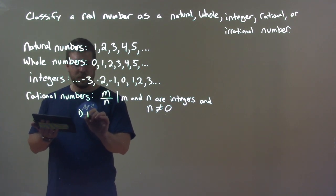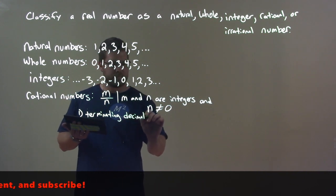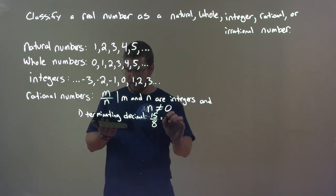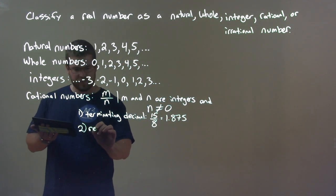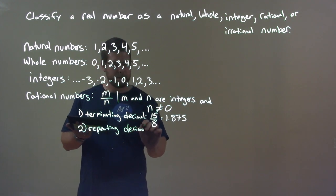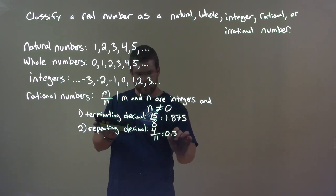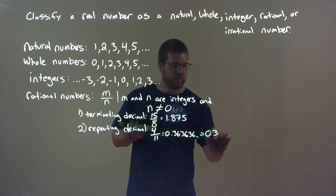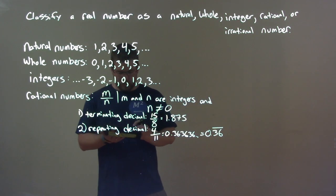For example, the fraction 15 over 8 equals 1.875 — that's a terminating decimal. Or we have a repeating decimal, like 4 over 11, which is 0.363636... going on forever. We write that as 0.36 with a bar over the 36, showing it repeats forever.